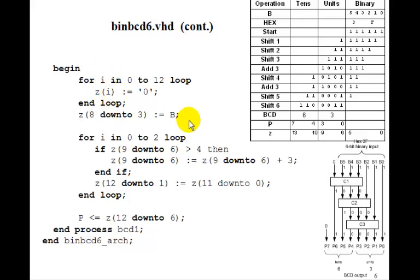The next step is to shift B left 3 bits. Well, that ends up being Z(8 down to 3). Here it is here. 8, 7, 6, 5, 4, 3 just gets B, which was 5 down to 0. So that shifts B left 3 bits.